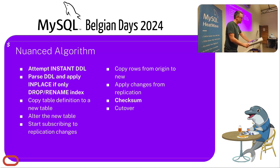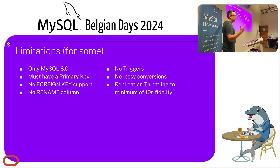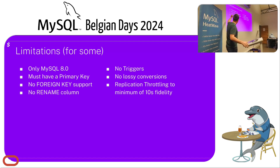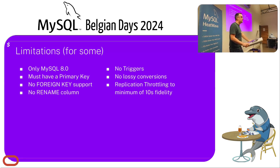Spirit's limitations: it only supports MySQL 8, and you must have a primary key — that's how we figure out how to chunk the table. We don't support foreign keys because foreign key cascading actions don't come through the binary log. We've chosen not to support column renaming because getting the intersection of columns is really hard. We don't support triggers, and we don't support lossy conversions — so if you try to add a unique key to non-unique data, it will panic. We've also chosen to support replication fidelity down to only 10 seconds granularity.